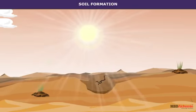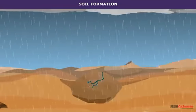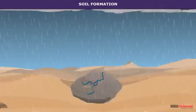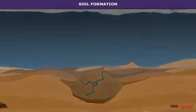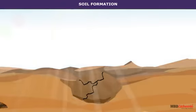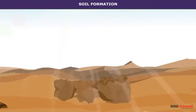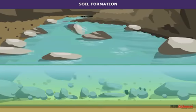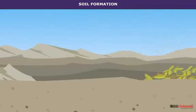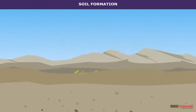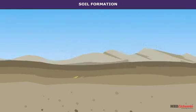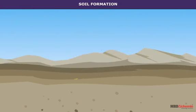Soil formation is an extremely slow and complex process. It takes several years for the formation of just one centimeter layer of soil. Temperature, precipitation, and other chemical constituents of soil also help in soil formation. Thus, soil is formed by mechanical, chemical, and biological processes. Plants, animals, insects, and countless bacteria, besides providing materials for formation of humus, are also useful when they are alive.